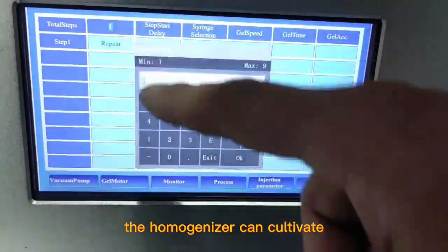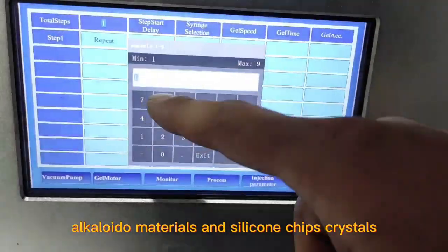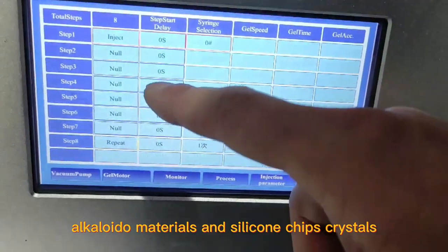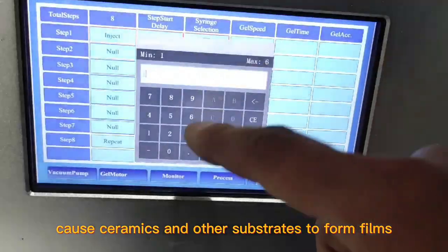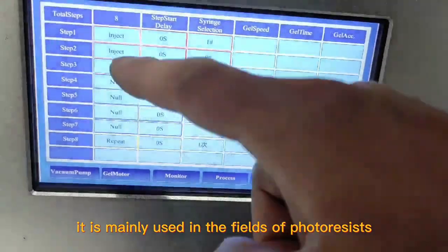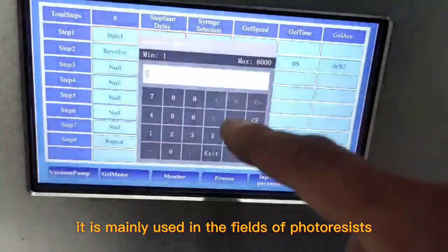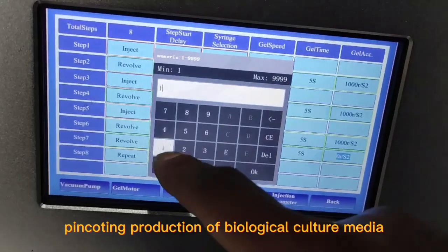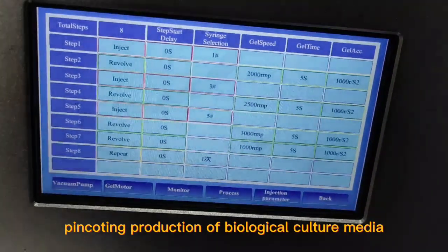The homogenizer can coat liquid alkaloidal materials on silicon chips, crystals, quartz, ceramics, and other substrates to form films. It is mainly used in the fields of photoresist spin coating, production of biological culture media, and production of polymer films by cell gel method.